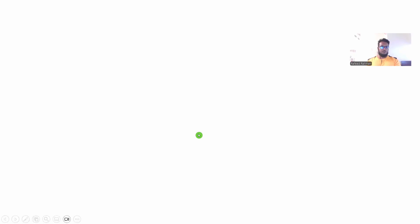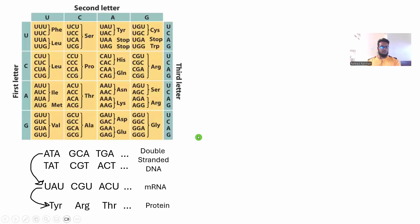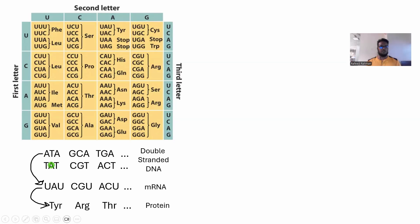First of all, let's recap on one thing. We have this double-stranded DNA. I have written a very small portion of the DNA — A, T, A, T, C, A and so on. This is the complementary strand. We all know the complementary base of A is T, complementary base of T is A and so on. So this is the double-stranded DNA. Let's say this first strand, which is the forward strand,